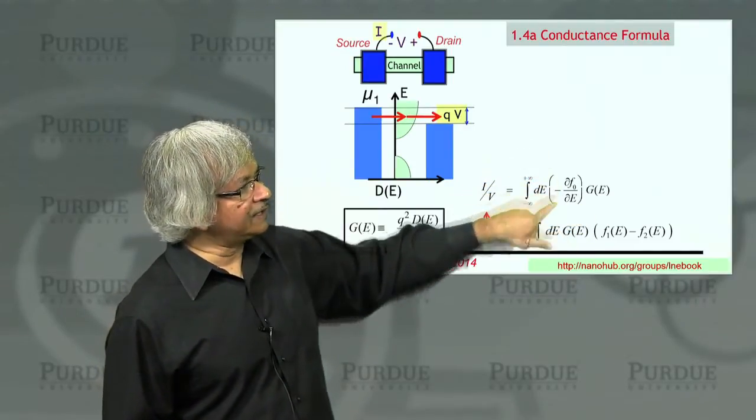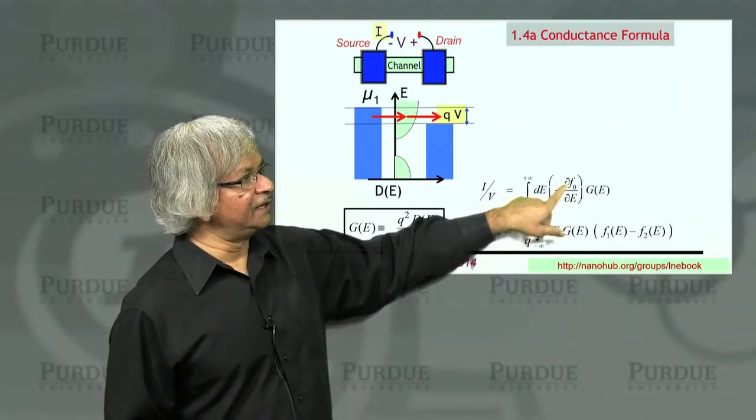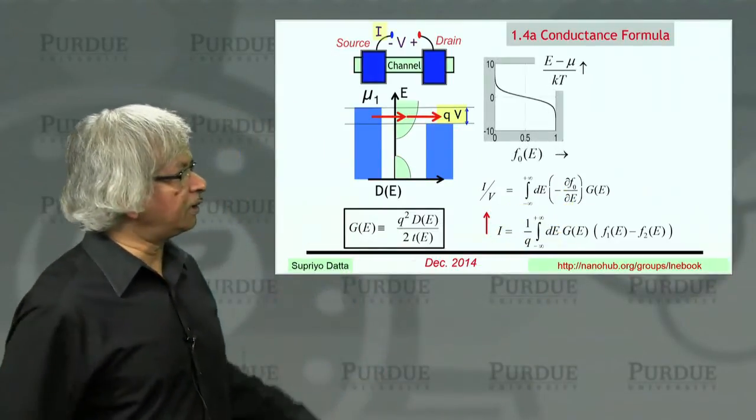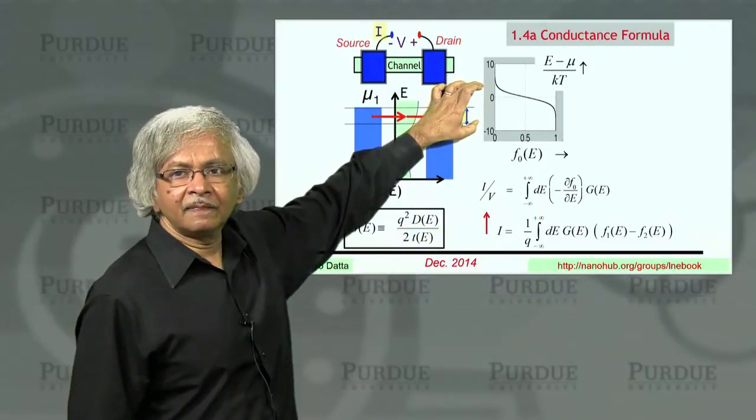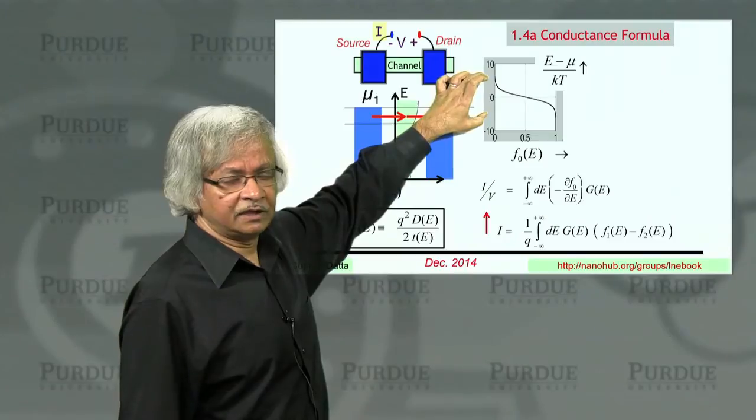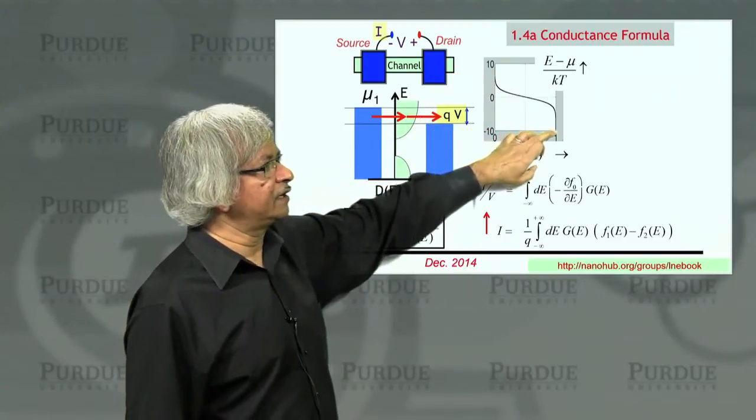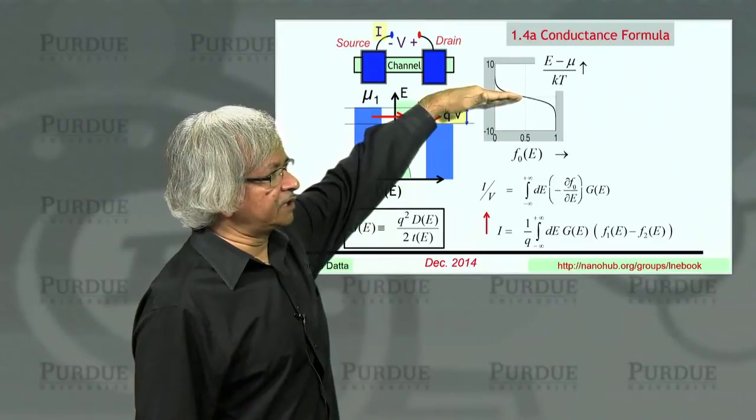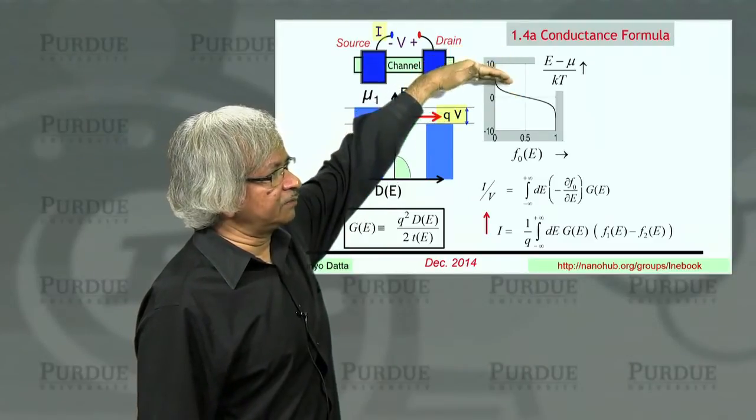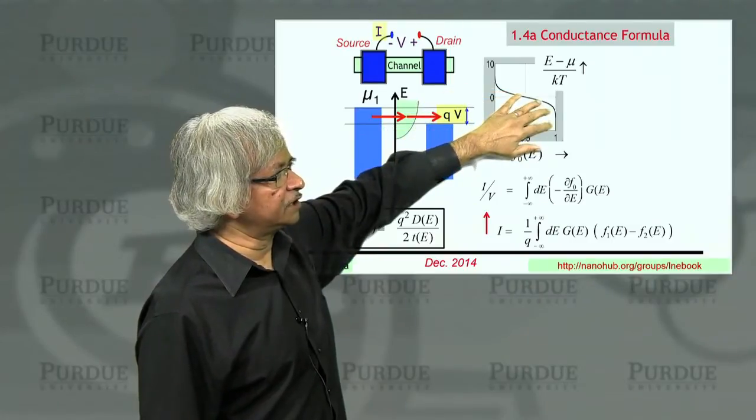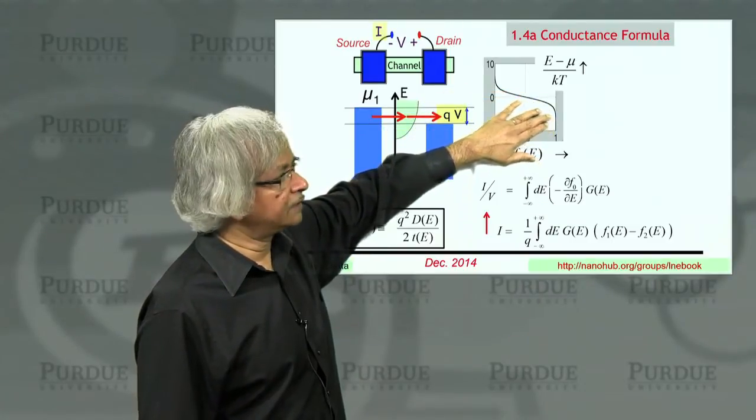Notice what enters this relation is the derivative of the Fermi function. Now, what we talked about earlier, probably in the second lecture, is this Fermi function. The Fermi function, as you know, has this electrochemical potential - above the electrochemical potential it goes to zero, below the electrochemical potential it goes to one. That's this Fermi function.